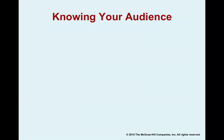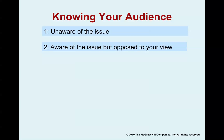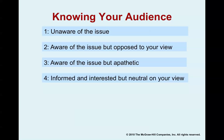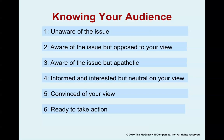Once you analyze your audience, you're going to find they fall into six different categories. The first category is your audience may be totally unaware of the issue. They could be aware but totally against what you have to say. The third category is they're aware but apathetic. They may be informed and interested but totally neutral. Maybe they're already convinced of your viewpoint. And maybe they are already at level six, which is where they are ready to take action.